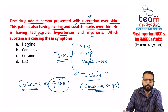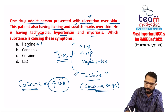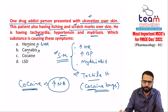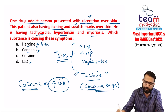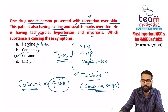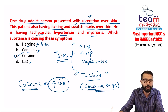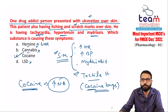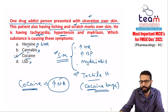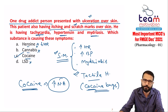Heroin is a morphine group drug — it decreases heart rate and blood pressure. Cannabis does not cause tachycardia or high blood pressure. LSD causes visual hallucinations, not tactile. Only cocaine causes sympathomimetic effects and tactile hallucinations. Cocaine is also used as a local anesthetic — it is a sodium channel blocker.